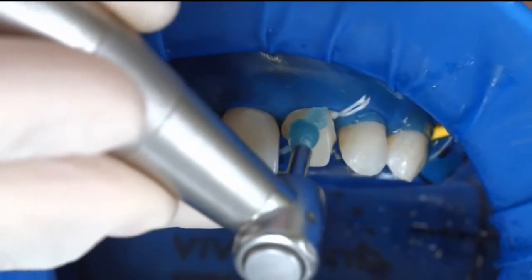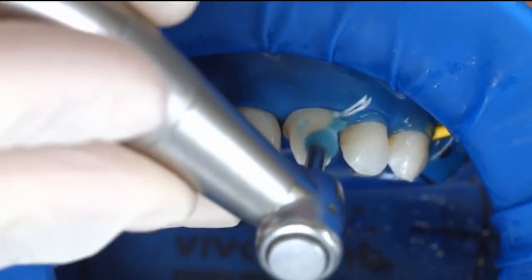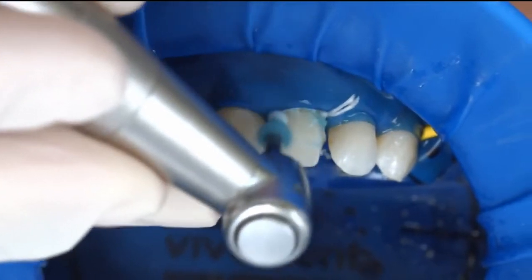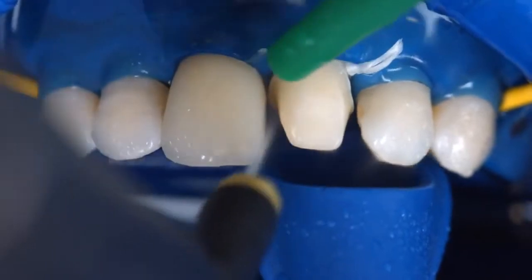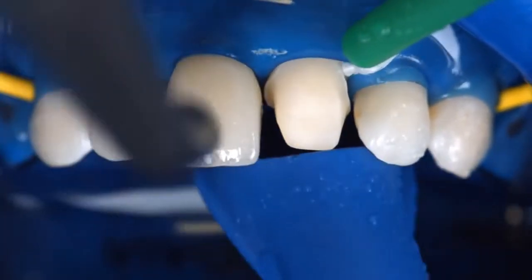Clean the preparation again with a polishing brush and fluoride-free cleaning paste such as fluoride-free Proxit. Rinse the preparation with water spray and dry it with air. Avoid over-drying.